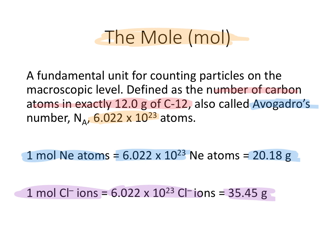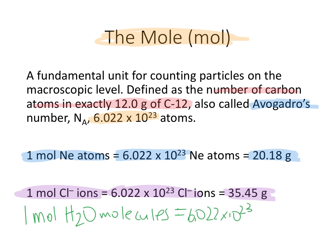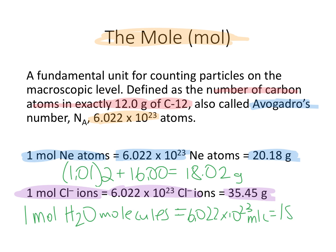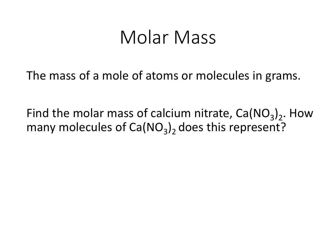This would also work if you had molecules, like one mole of water molecules. That would be 6.022 times 10 to the 23rd water molecules. If you add it up on the periodic table, hydrogen is 1.01 grams times 2, plus oxygen is 16.00, which equals 18.02 grams for one mole of water molecules. So the molar mass is the mass of a mole of a sample — atoms, molecules, ions, or whatever you're looking for — in grams.